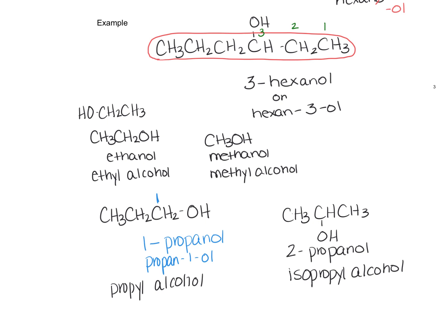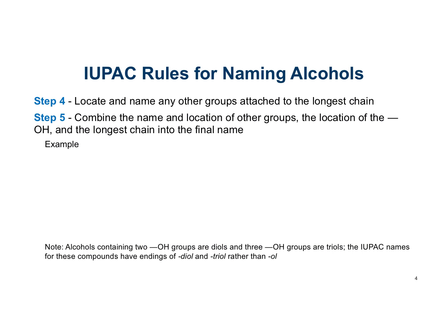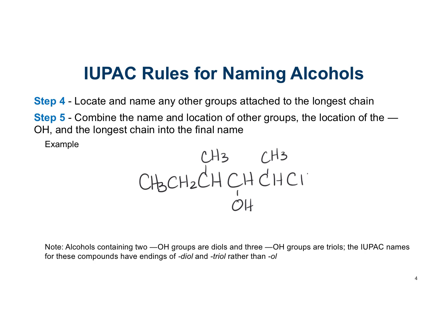Now, what if we have some substituents that are attached? You're still going to locate the longest carbon chain, which for us is going to be six carbons here. I like to circle it, and so that's going to give us the base name of hexanol.